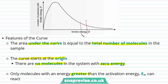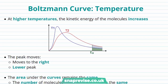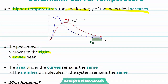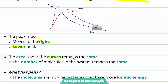Now we've had a brief introduction to the Maxwell-Boltzmann curve, let's look at it in relation to increasing the temperature of a reaction. At higher temperatures the kinetic energy of the molecules increases, so from our original curve we get a slightly different curve. The peak moves to the right and becomes a lower peak — the curve labeled T2 symbolizes a higher temperature. Importantly, the area under the curve remains the same; the number of molecules in the system is the same.